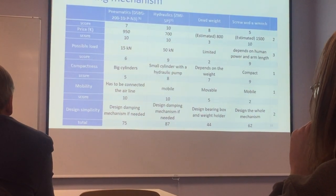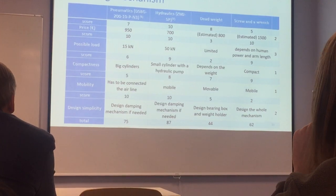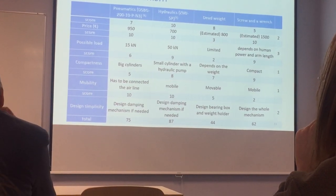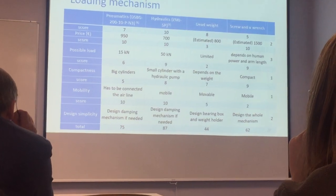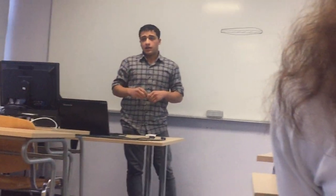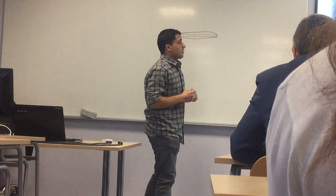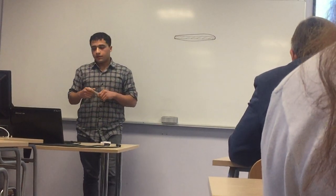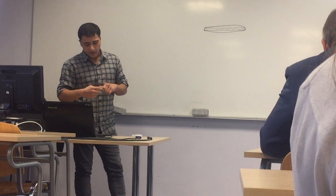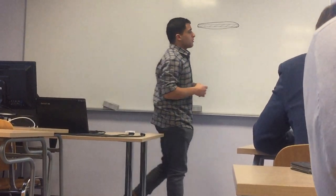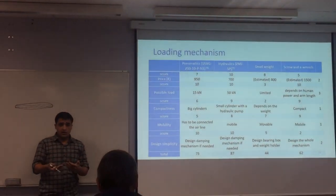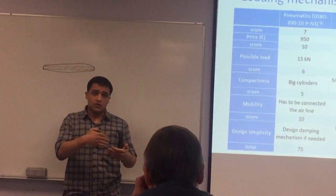We now move to the loading mechanism. From the conceptual solution we can load using a screw mechanism, dead weights, a hydraulic jack, or a pneumatic cylinder — among other feasible options. We compose another comparison matrix evaluating price, possible load, compactness, mobility, and design simplicity. Dead weight scores very low because it is quite hard to place 1.2-tonne increments on the machine. The screw mechanism is quite complicated to build and was also excluded.